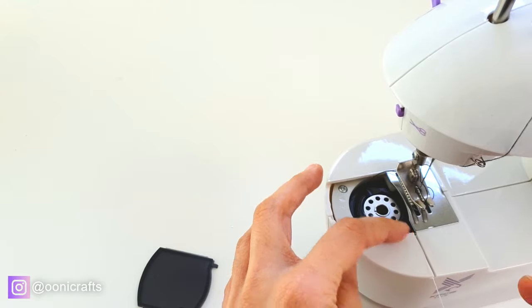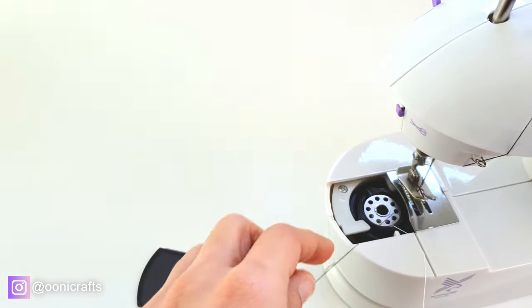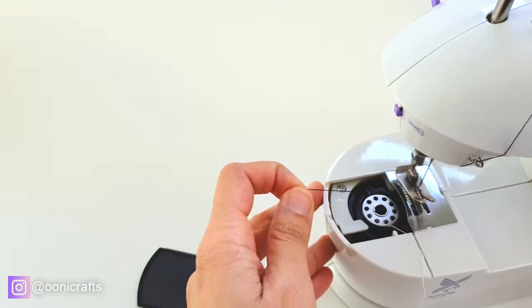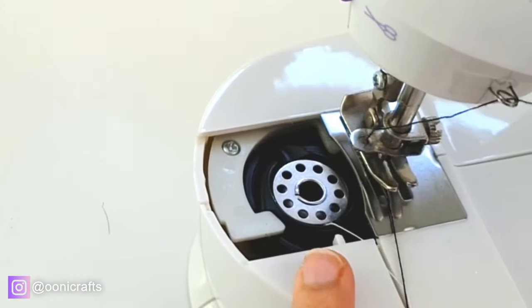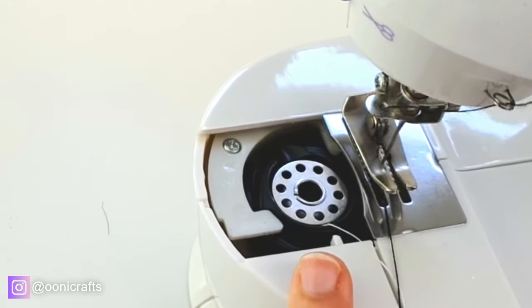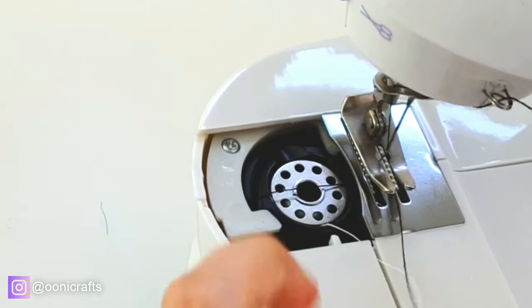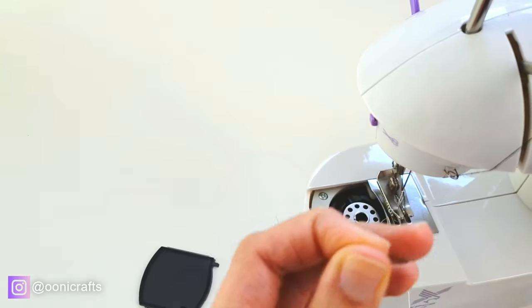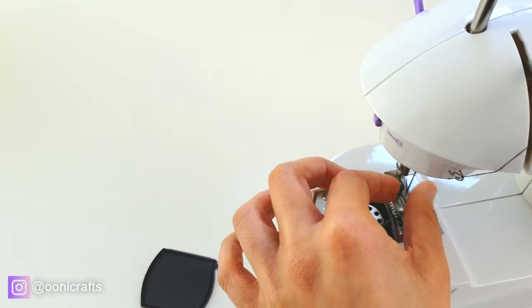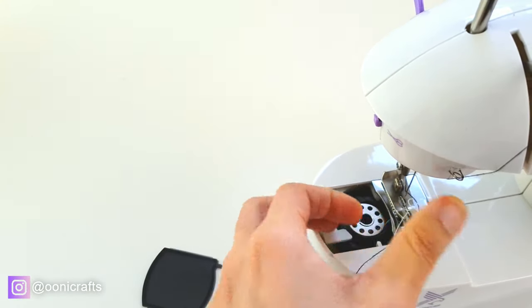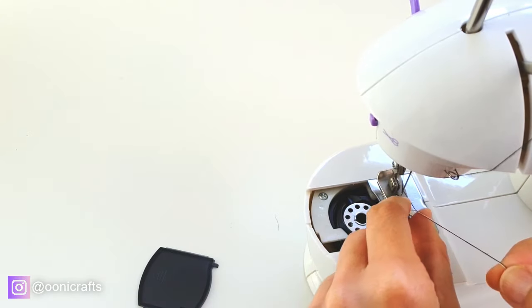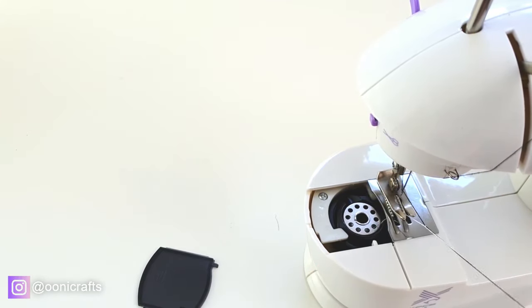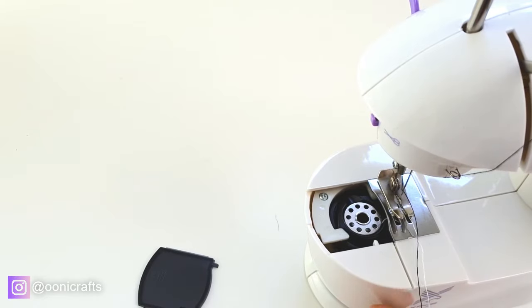And once again, like before, we're going to raise the bottom thread. So I turn the handwheel towards myself, the thread goes around. There it is, going around. I've got it. There it is. I'm gonna pull up the bobbin thread, and as before, you might think you're doing it perfectly well, just sliding both the threads back, like we normally do.